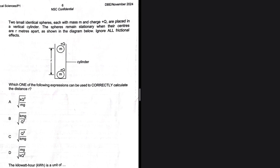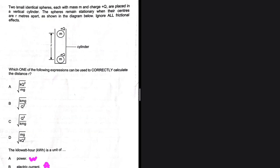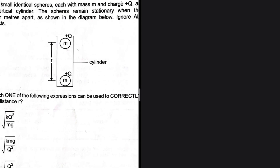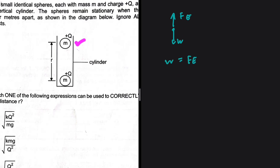Question 1.7: two small identical spheres, each with mass m and charge +q, are placed in a vertical cylinder. The spheres remain stationary when their centres are r metres apart. Since the spheres are stationary, the weight and the electrostatic force exerted by the lower sphere must be equal to each other.